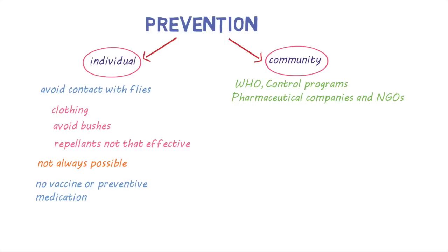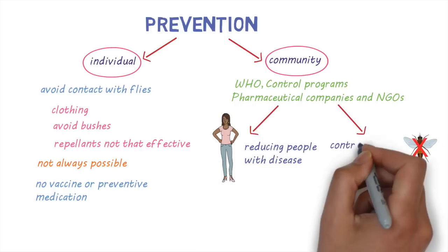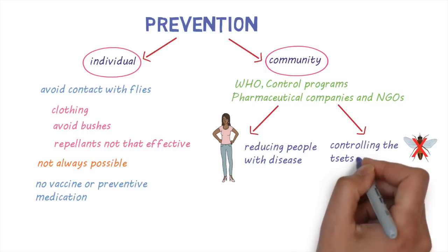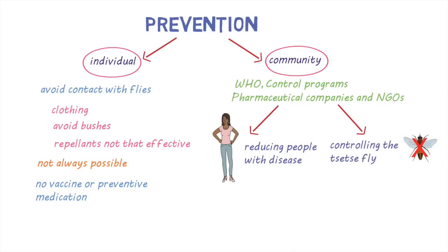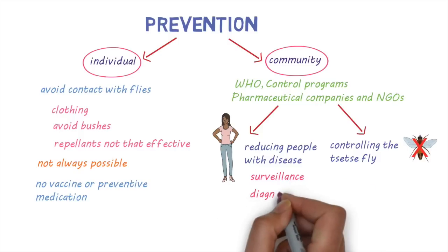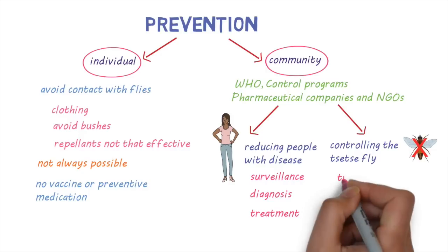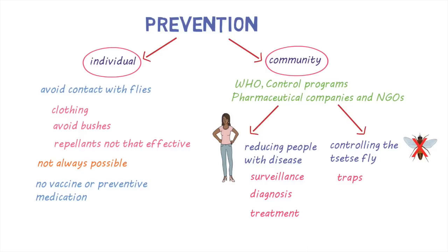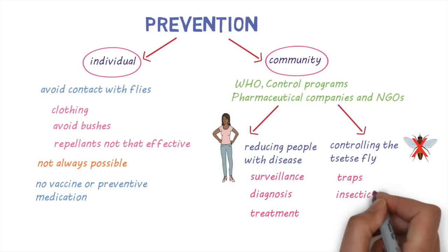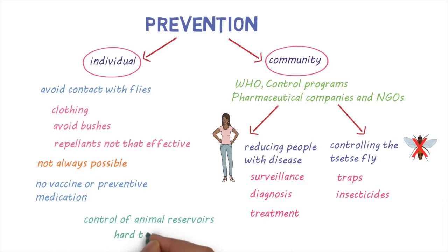They focus on two areas: reducing the number of people with disease and controlling tsetse flies. Reducing the number of people with disease needs good surveillance, diagnosis, and treatment that is effective, prompt, and accessible. Controlling tsetse flies is usually done by insecticide-impregnated traps and application of insecticides to the resting sites of flies. Controlling the disease in animal reservoirs is generally hard to do.